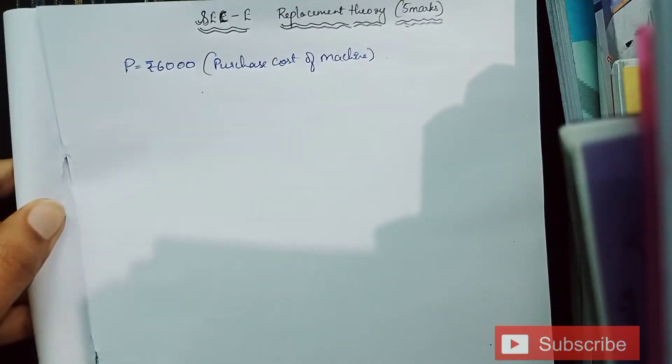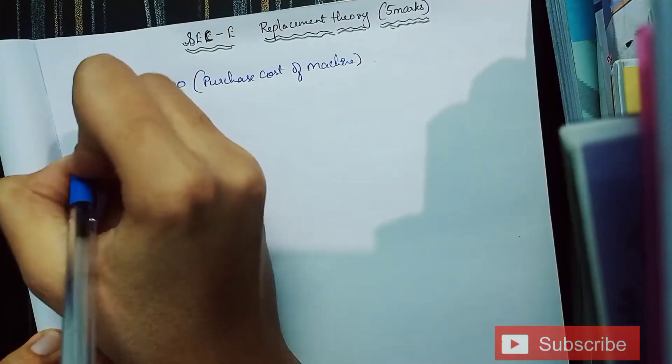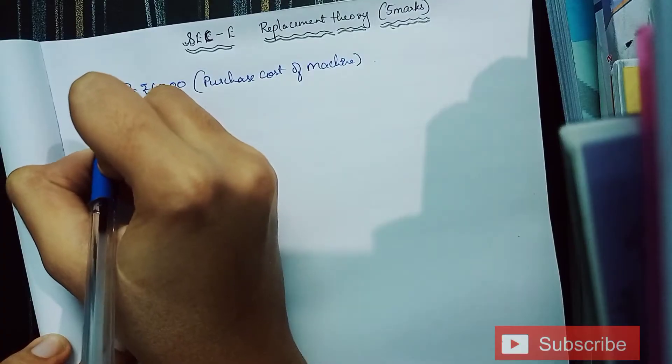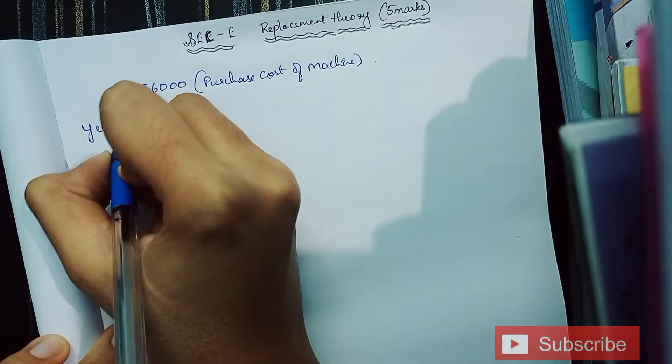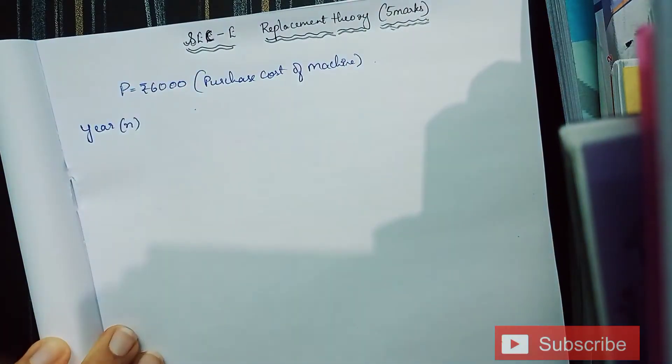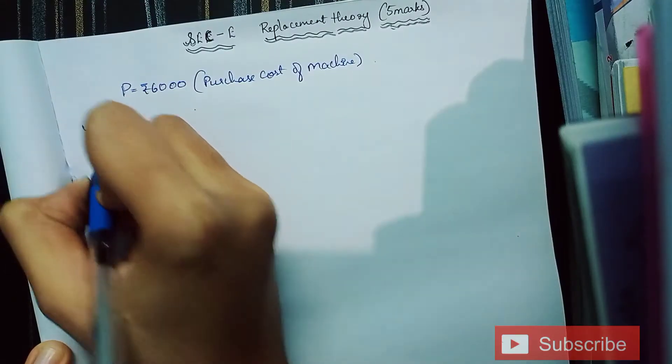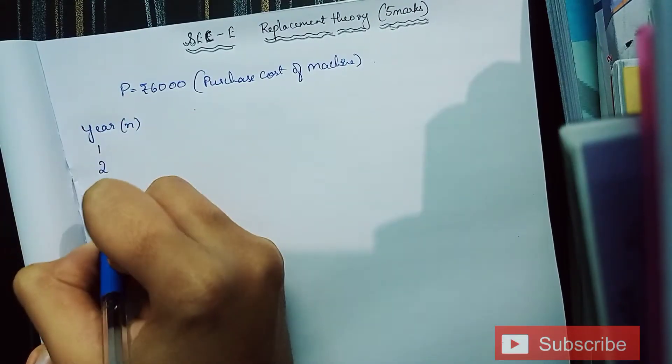Now we're supposed to make columns. The first column indicates the years and is denoted by n: 1, 2, 3, 4, 5. So these are the number of years given.